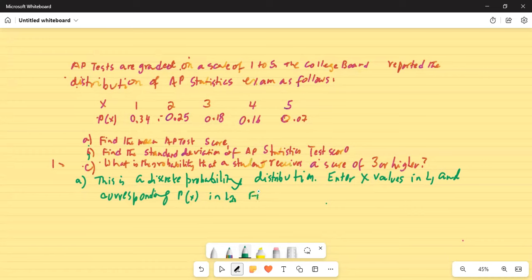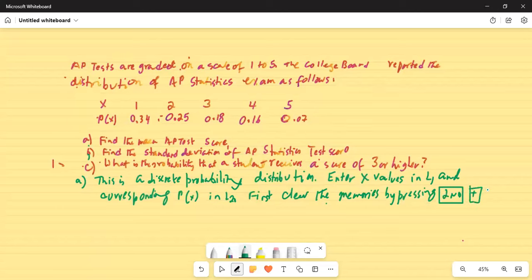So first clear the memories by pressing second button, then plus button on top of enter button, then select number 4, then enter. Clear all list. We put our calculator on, then second button, then plus button, then 4, then enter. Clear all list, done.